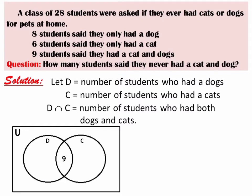How many students said they only had a dog? It's 8. So we will write 8 here. Why did we not subtract the intersection value? Because the 8 students said they only had a dog — that is different from the 9 students in the intersection who had both. So we do not subtract. How about students who only had a cat? There are 6 students. So we write 6 here.